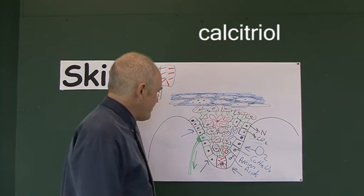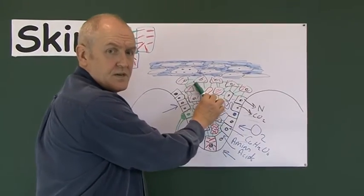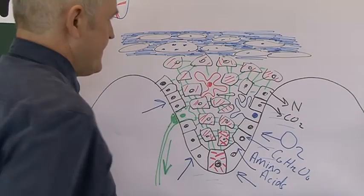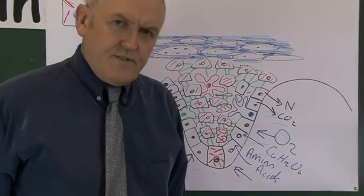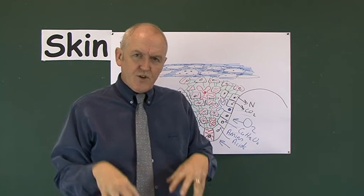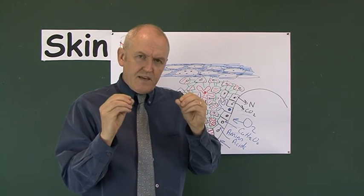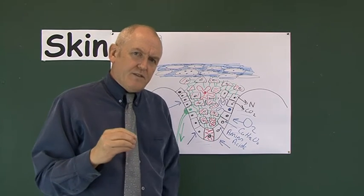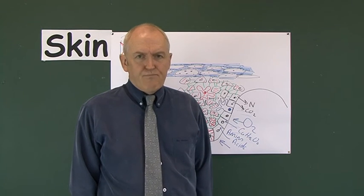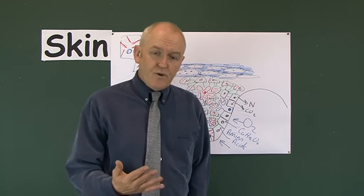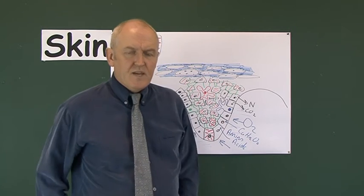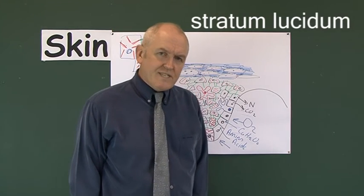So we've got three layers: the stratum basale, the stratum spinosum, and the stratum granulosum. Now in thick layers of skin — such as the palms of the hands, soles of the feet, and fingernails — there's an additional layer not present in thin skin. This is called the stratum lucidium. 'Lucidium' means lucid or clear — it's a transparent layer.